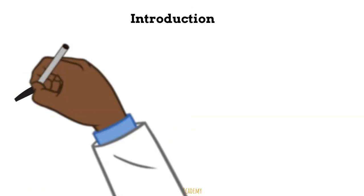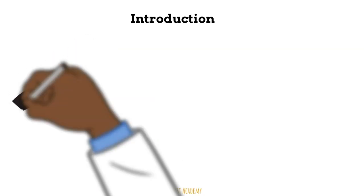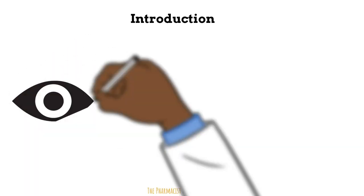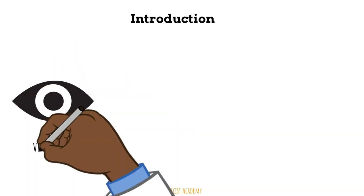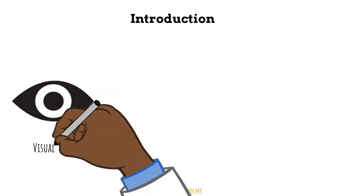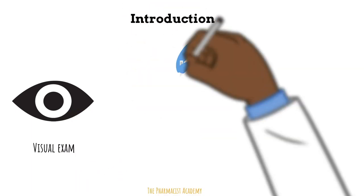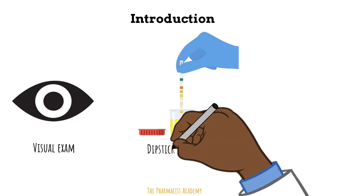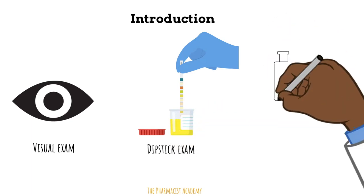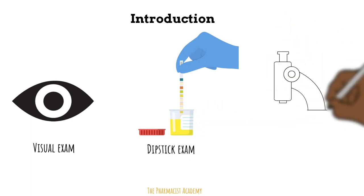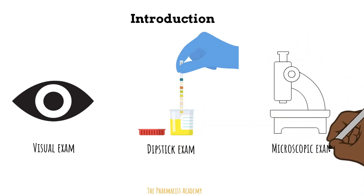A complete urinalysis consists of three distinct testing phases: a visual examination which evaluates the urine's color and clarity, the dipstick exam which tests for certain substances, and the microscopic exam which will help identify cell types, proteins, and microorganisms like bacteria.